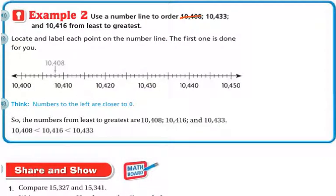So now we're going to do 10,433. So 10,400. So there's 10,400 and 40, and this is 10,430. So it's going to be in between. So if this is 30, this is 31, 32, 33. So my point is going to go right here.